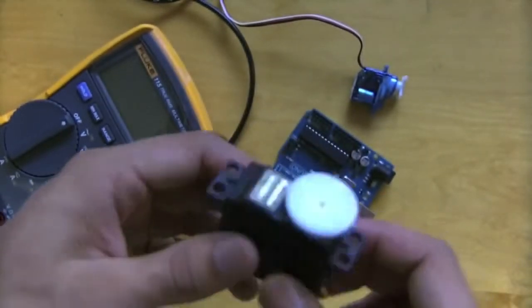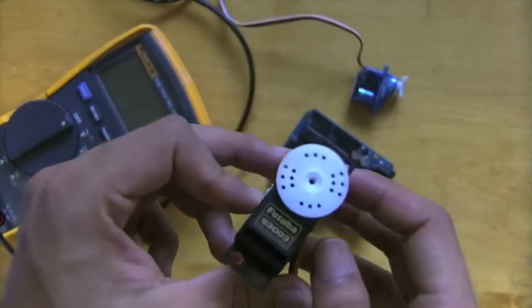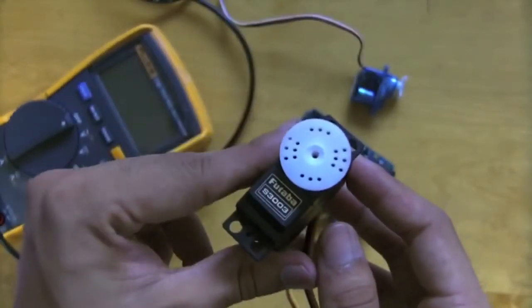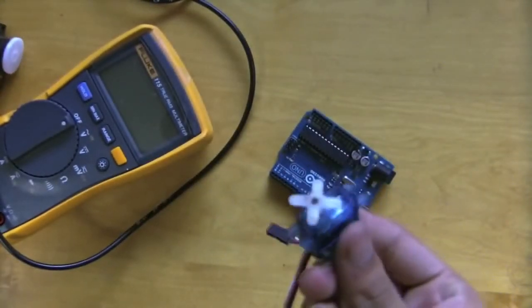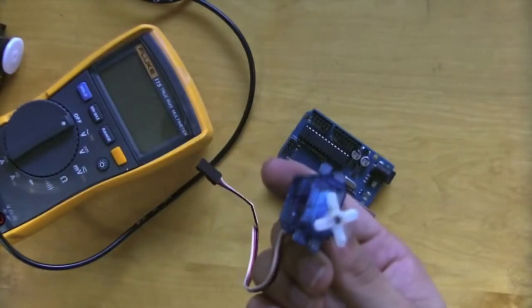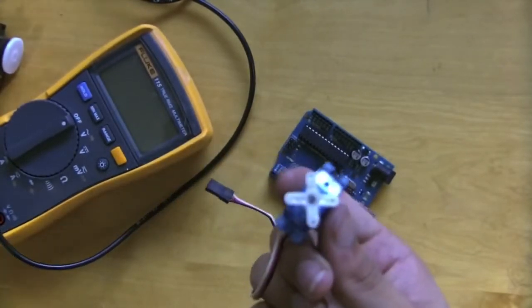Servos like this cost around $15 or so. There are a couple of good companies, this is by Futaba, another one is Hitec. And you can also get smaller ones like this from eBay for around $2 or $3. These apparently weigh 9 grams and work fine for smaller projects.